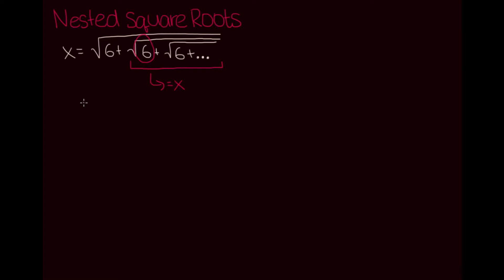This observation allows us to rewrite our equation as x is equal to the square root of 6 plus x. If we square both sides, we get x squared is equal to 6 plus x.